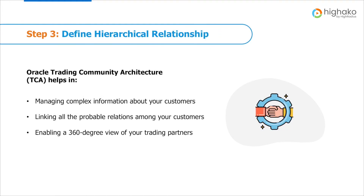The third step is to define hierarchical relationships. Oracle Credit Management uses a Trading Community Architecture to define various hierarchies. TCA allows you to manage complex information about the parties, customers, or organizations, links the hierarchical relationship to make it a single entity, thus enabling a 360-degree view of your trading partners.